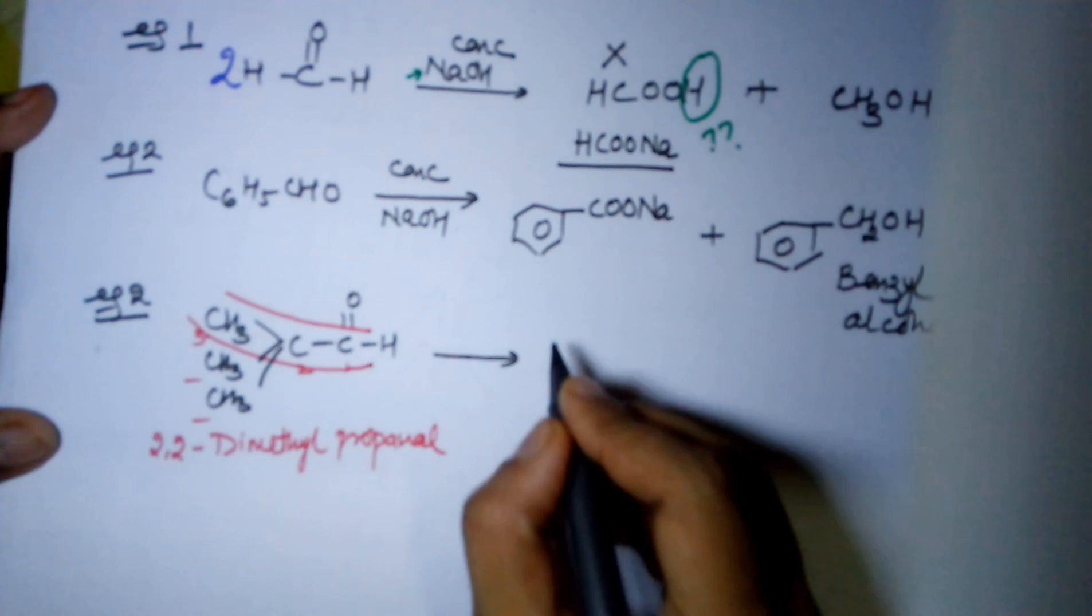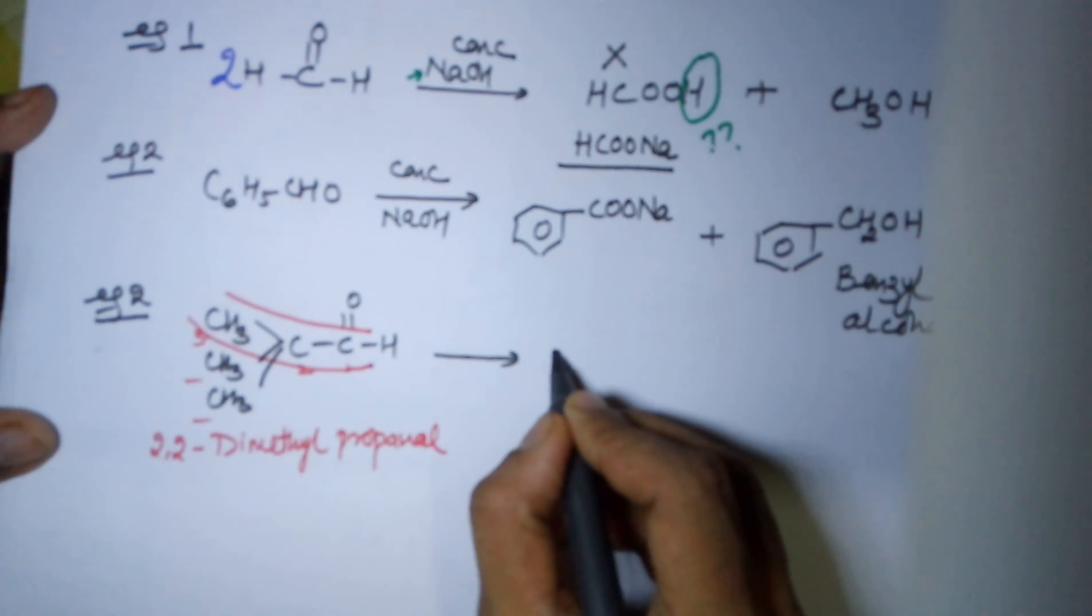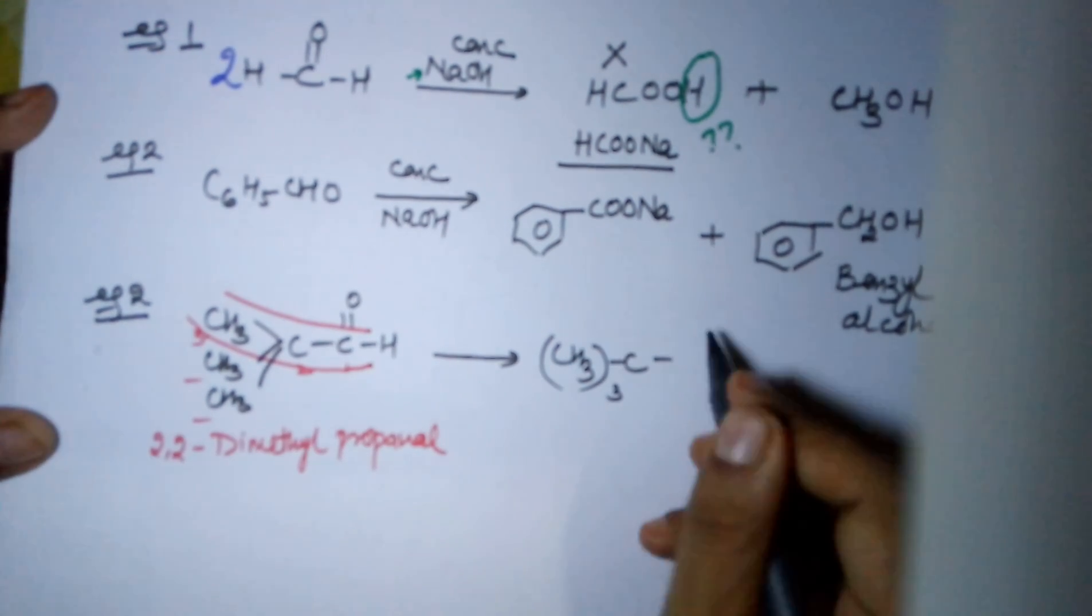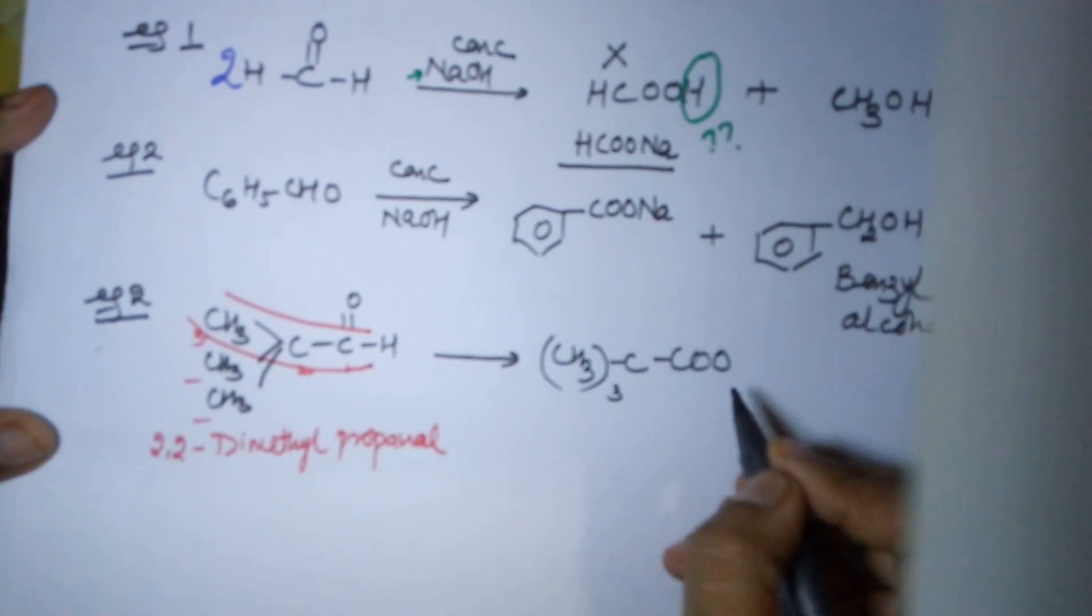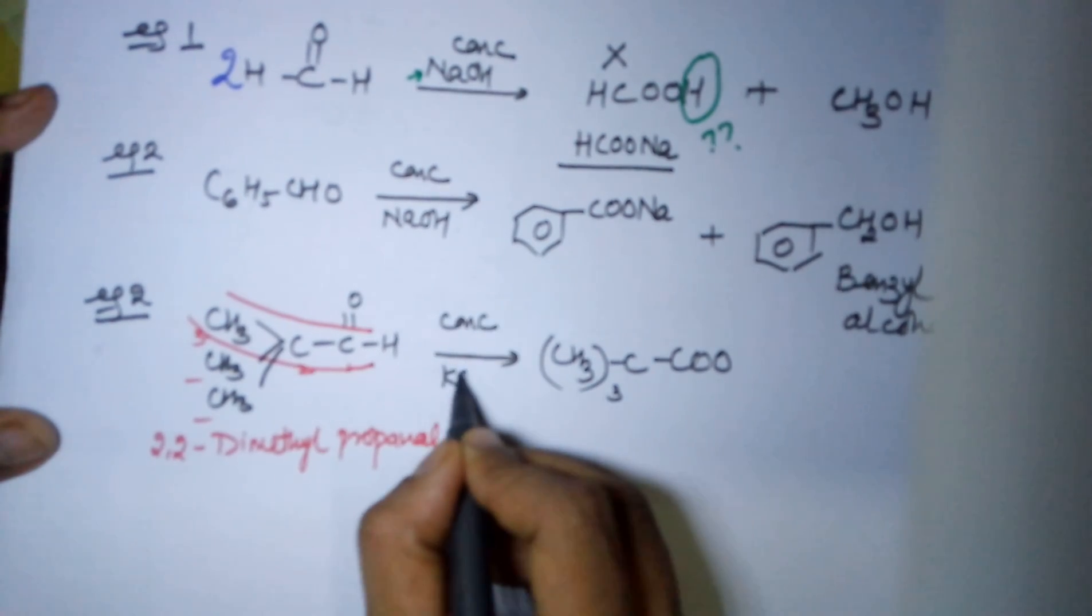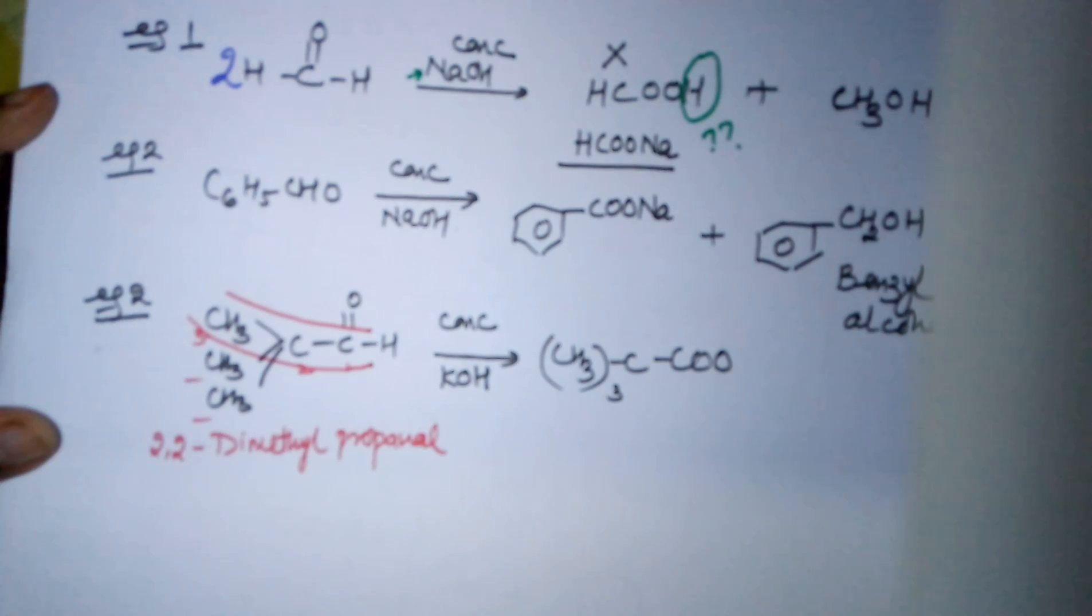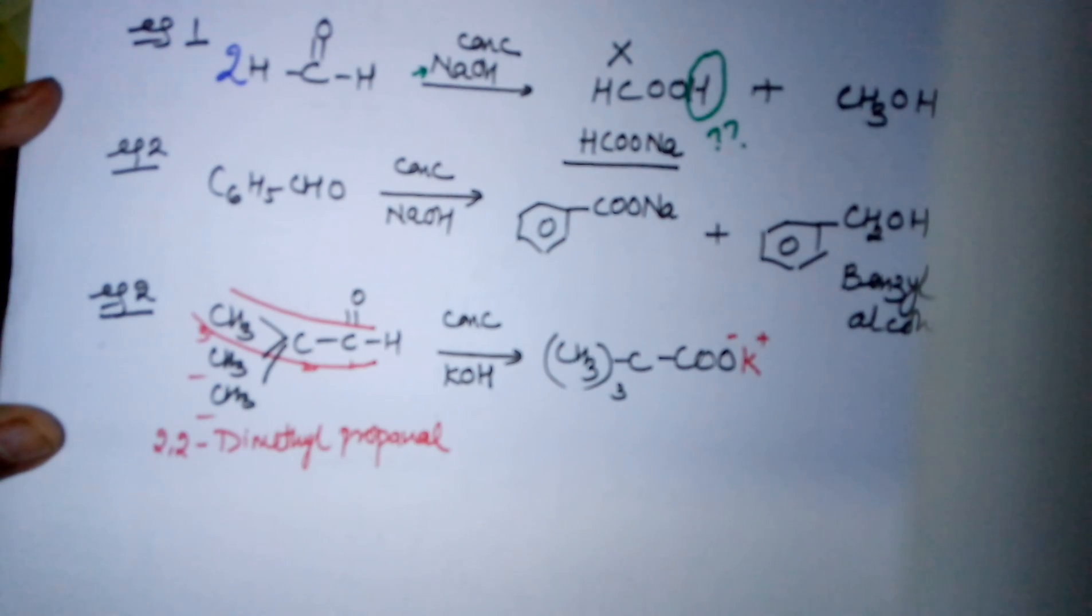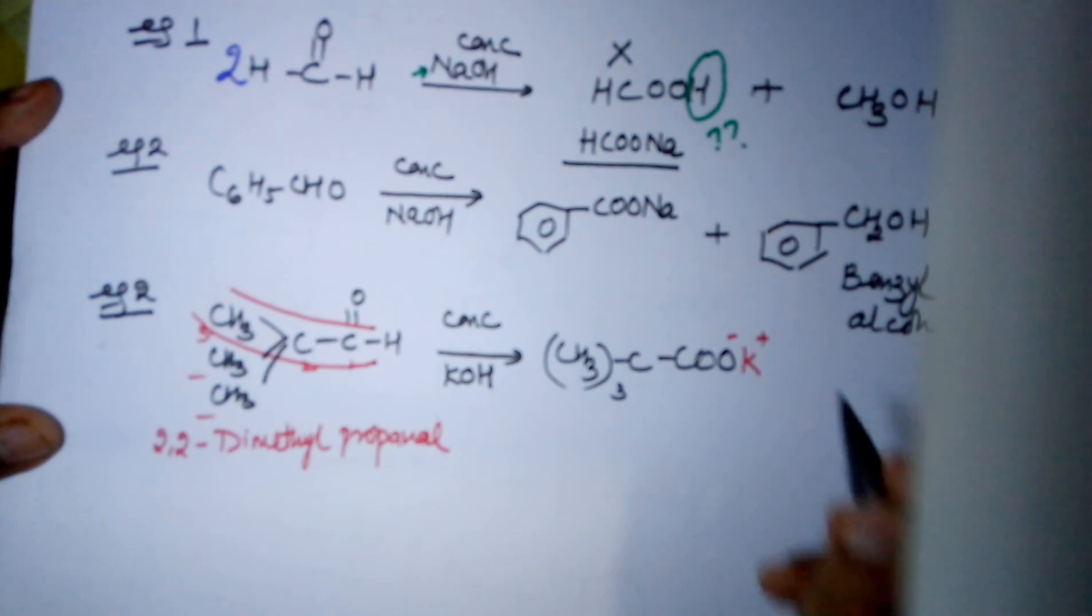Now this particular compound also has no alpha hydrogen, the prior requirement for Cannizzaro's reaction. So your products formed would be one is the oxidized product: (CH3)3C bonded to it. Now your aldehyde will transform into carboxylic acid, but in the alkali medium I am this time going to take concentrated KOH, so your product here automatically becomes a potassium salt.